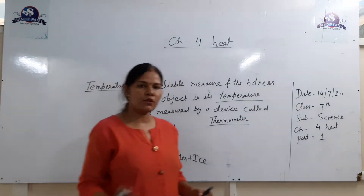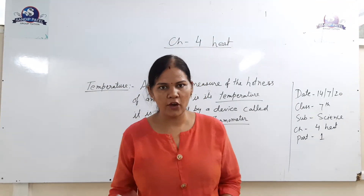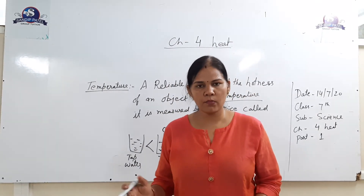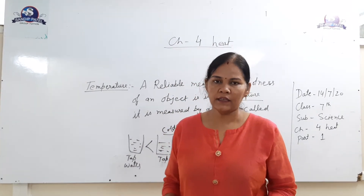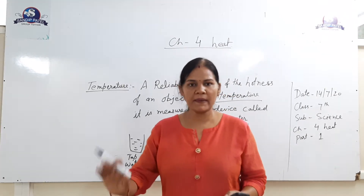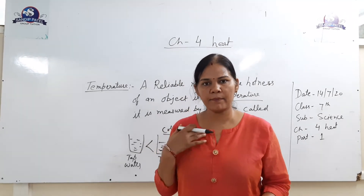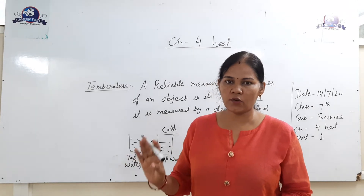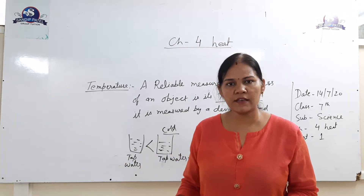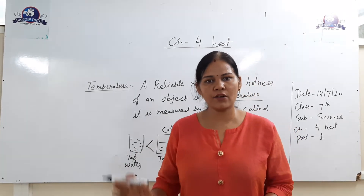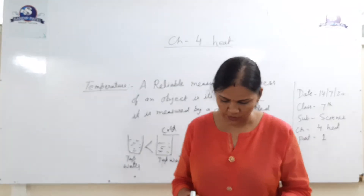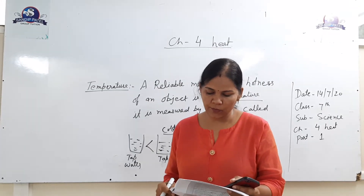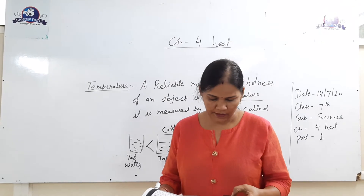If you take a glass of water, the water can be hot or cold. So how do we find using our senses? When we touch any object, we find whether it is hot or cold. We have an activity given as 4.1.